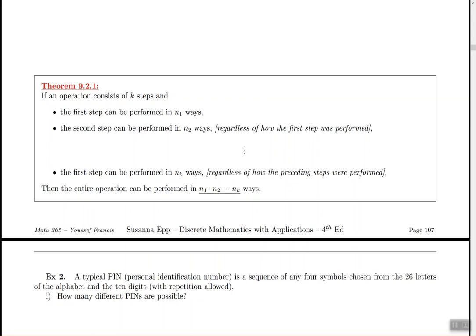Theorem 9.2.1 describes what's known as the multiplication theorem or the multiplication rule. Basically it says if the first step in a process that has k steps can be done in n1 ways and the second step can be done in n2 ways and so on all the way to the last step, then the total number of ways that the operation can be performed is n1 times n2 times n3 and so on all the way to nk.